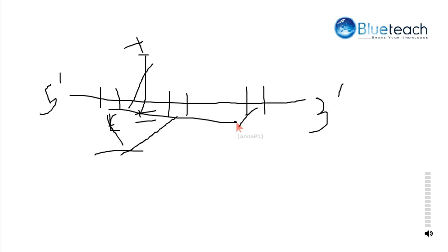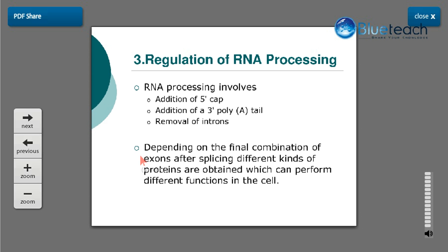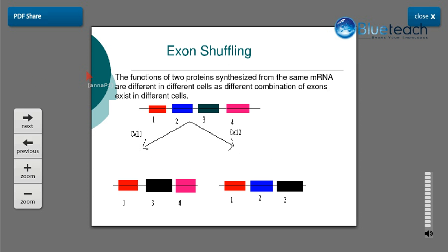This joined mRNA gets translated to produce one particular kind of protein. Similarly, a different combination of exons can join together and get translated to produce a different kind of protein, and the functions performed by these two different proteins are quite different. So the expression of gene is controlled at this step — depending upon the final combination of exons after splicing, different kinds of proteins with different functions are obtained. Different cells can use different combinations of exons, producing completely different proteins.